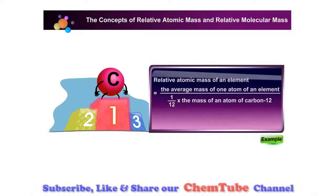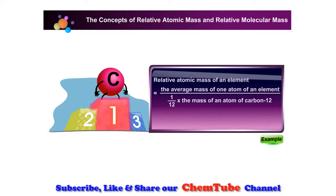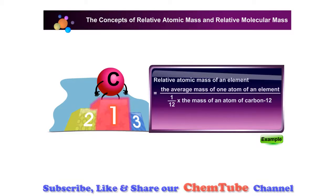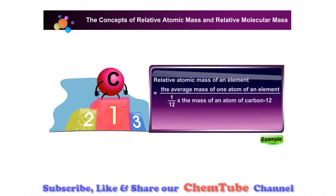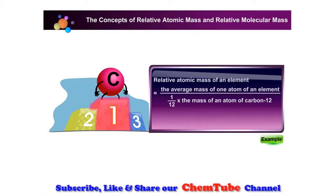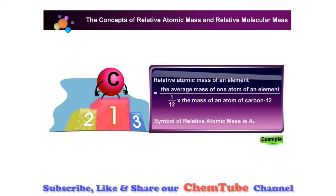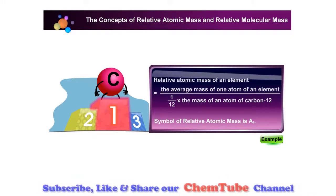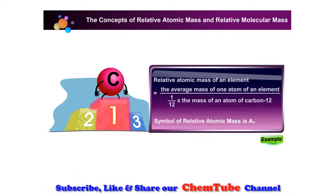Carbon-12 isotope is assigned a mass of exactly 12 units. Therefore, the relative atomic mass of an element is the average mass of one atom of an element when compared to one-twelfth of the mass of an atom of carbon-12. The symbol of relative atomic mass is Ar. Relative atomic mass does not have units.